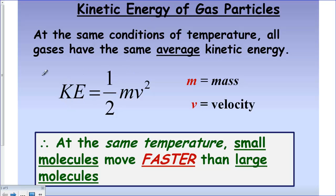Here is a little equation from physics. You may remember kinetic energy is one-half mv squared, m being mass, v being velocity. Based on this equation, the smaller the mass, the faster the molecules are going to move. The bigger the mass, the smaller the velocity is going to be. So we can conclude that at the same temperature, small molecules are going to move faster than large molecules, even though they may have the same kinetic energy.